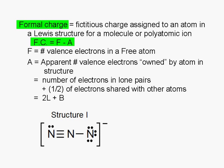In this formula, F is the number of valence electrons in a free atom. That is, the number of valence electrons that the atom has if it were alone. We can determine this by looking up the element in the periodic table. For example, a nitrogen atom belongs to group 5A. Therefore, alone by itself, a nitrogen atom has 5 valence electrons.